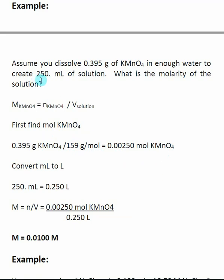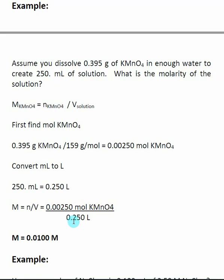The volume is given in milliliters, but I want liters. To go from milliliters to liters, you divide by 1000. After you do this a few hundred times, you can see that 250 milliliters is 0.25 liters. So I take my moles of potassium permanganate divided by the volume of the solution, which is 0.25 liters, and I get that the molarity of this solution is 0.0100 M.